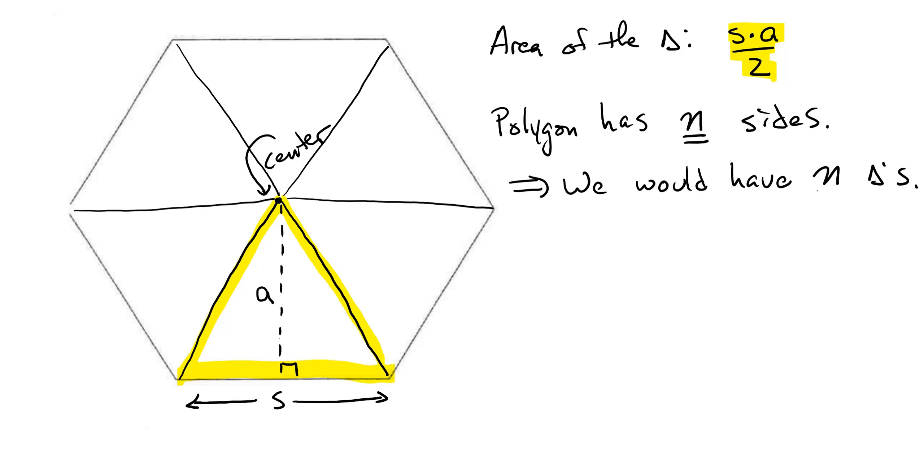So now if it had N triangles, we would take the area of one triangle and multiply it by N to get the area of the whole polygon. So area of an N-sided polygon would be A times S divided by 2.